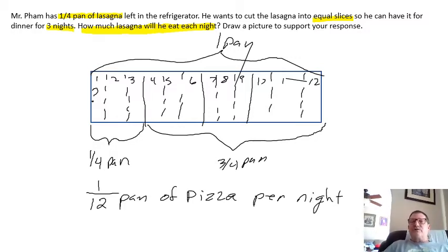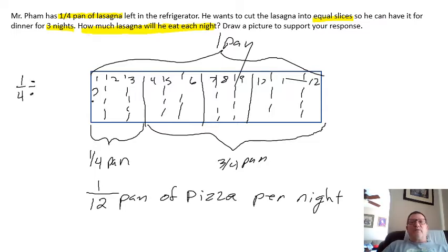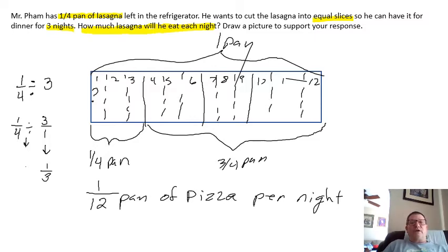Now let's double check ourselves. I have one-quarter pan divided by three nights. I'm going to rewrite that whole number as a fraction — three over one — because it still equals three. Since it's division of a fraction, I want to change that to multiplication, so I have to invert it. Since I invert it, I change the operation: one-quarter times one-third equals one-twelfth. So it checked.